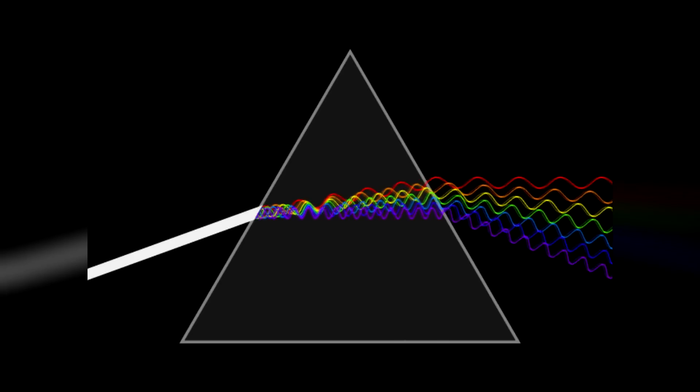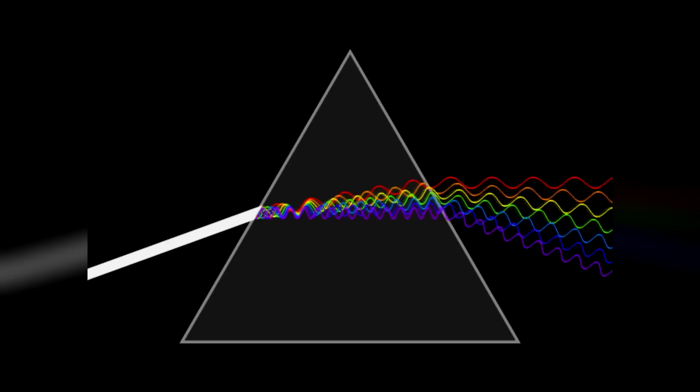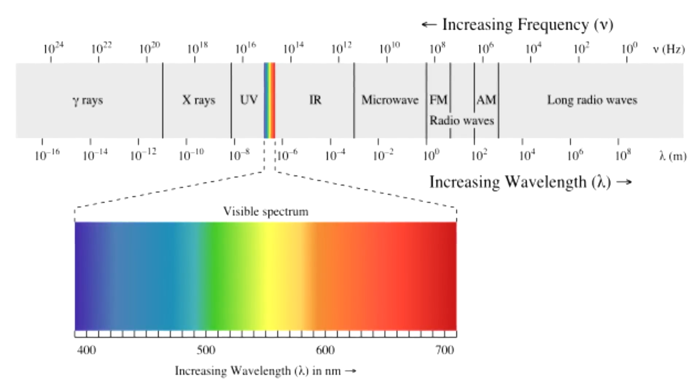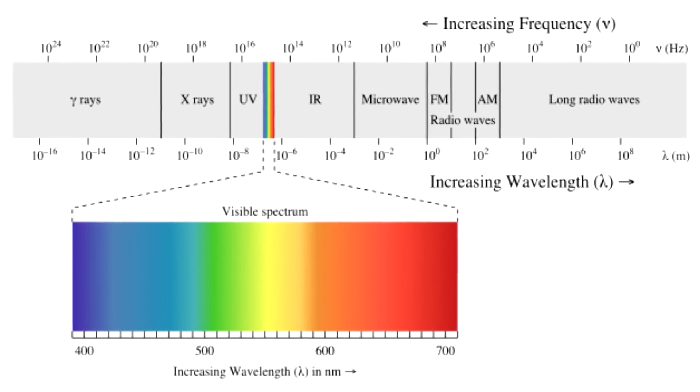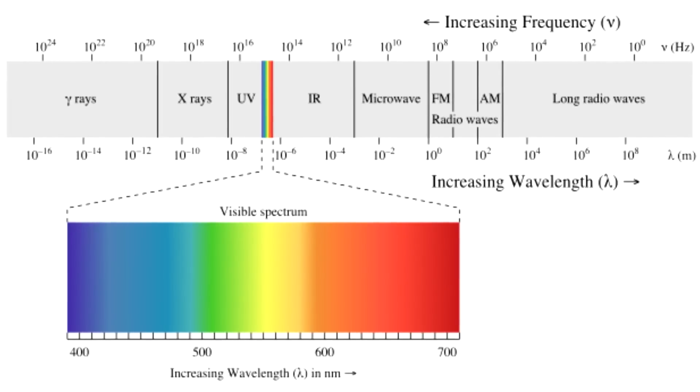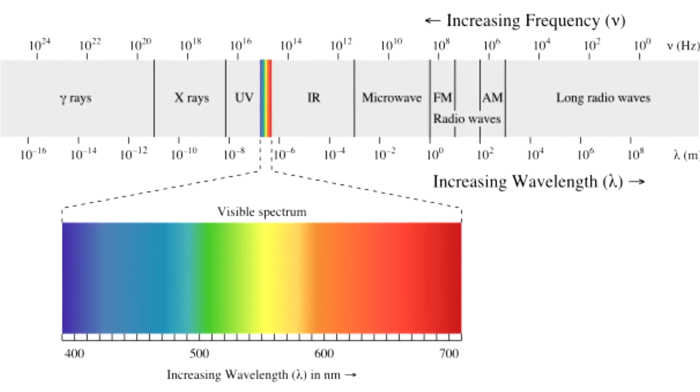When light passes from air to another denser medium, it is broken down into its corresponding different wavelengths. Light below the wavelength of violet is ultraviolet light. Then is the visible spectrum, and light above the red wavelength is infrared light.